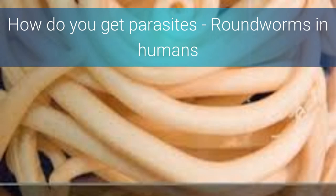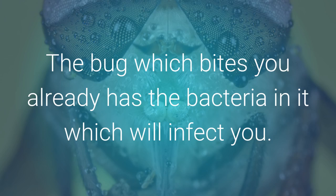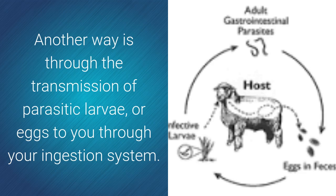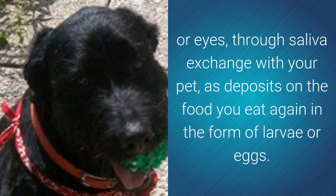How do you get parasites? Humans get parasites via some type of internal access. Bug bites are one way parasites are transmitted — the bug which bites you already has the bacteria in it which will infect you. Another way is through the transmission of parasitic larvae or eggs through your ingestion system. Parasite larvae or eggs get into you from your hands when you put them into your mouth or eyes, through saliva exchange with your pet, or as deposits on the foods you eat — again in the form of larvae or eggs.